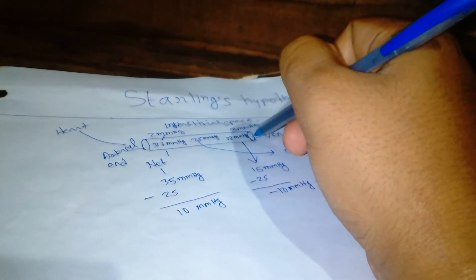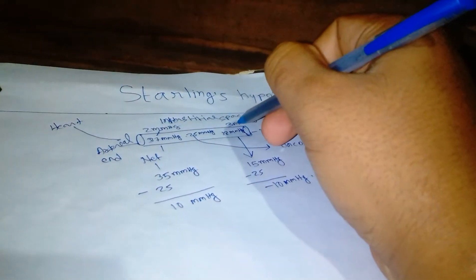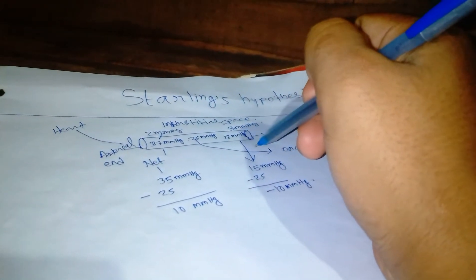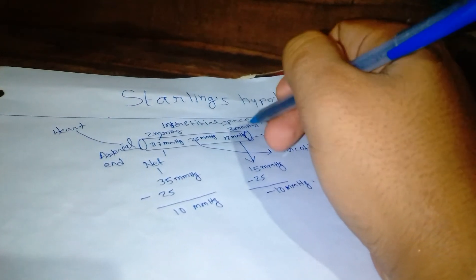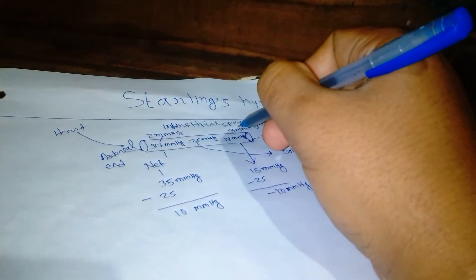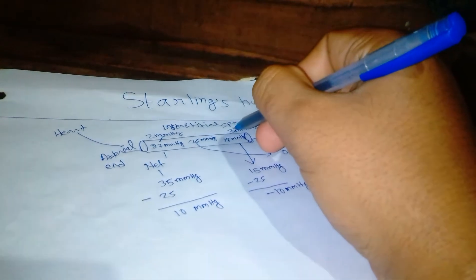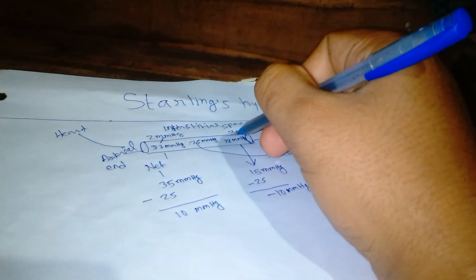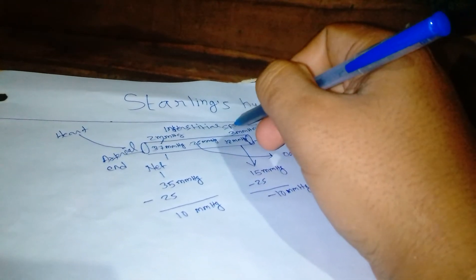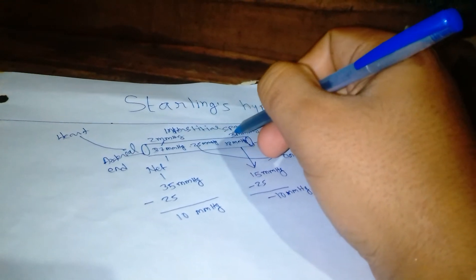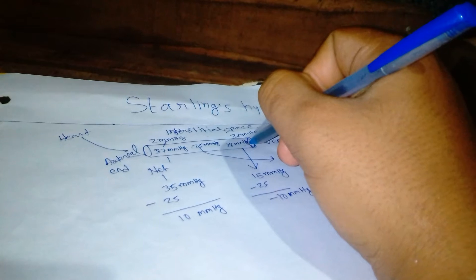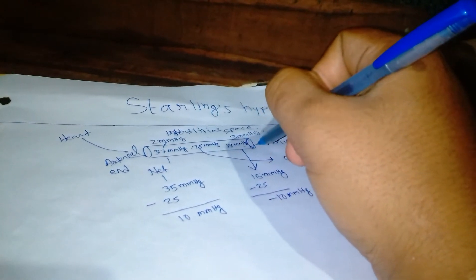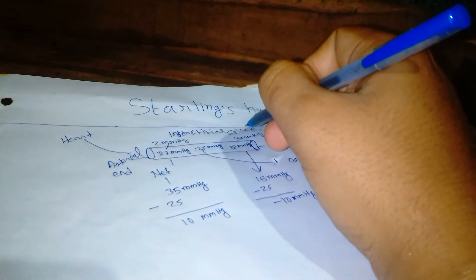And here in the venule part, since the hydrostatic pressure is less, less than the oncotic pressure, due to oncotic pressure the fluid will come back into the capillary and make the blood diluted again.